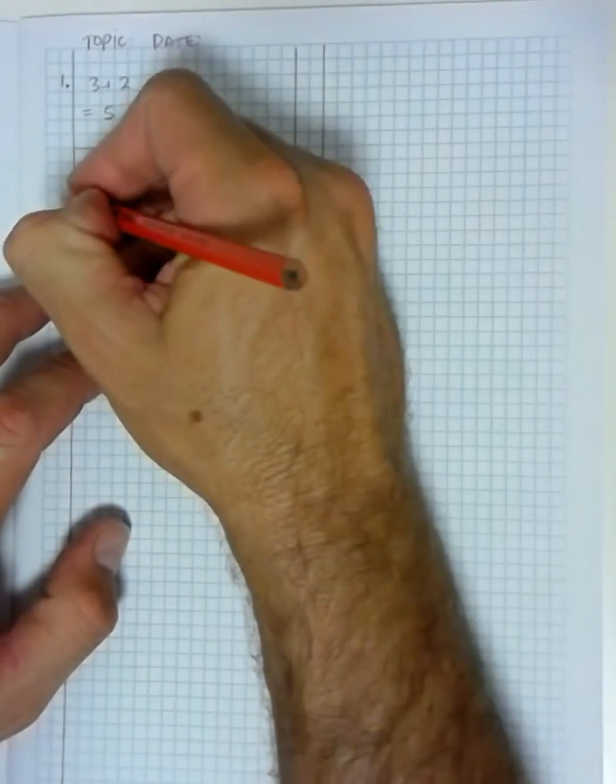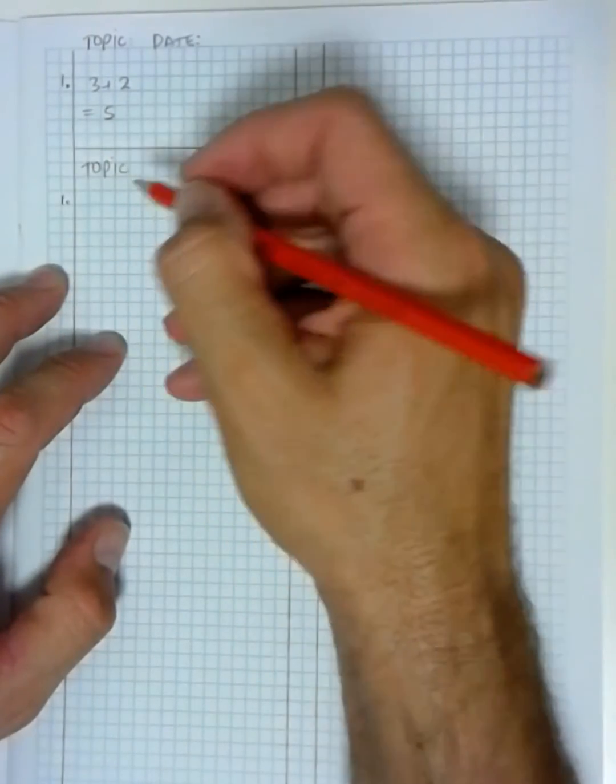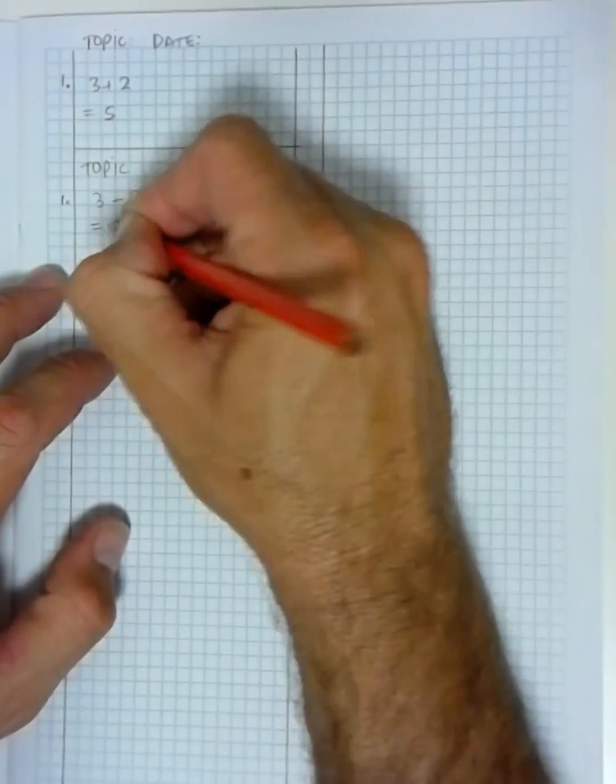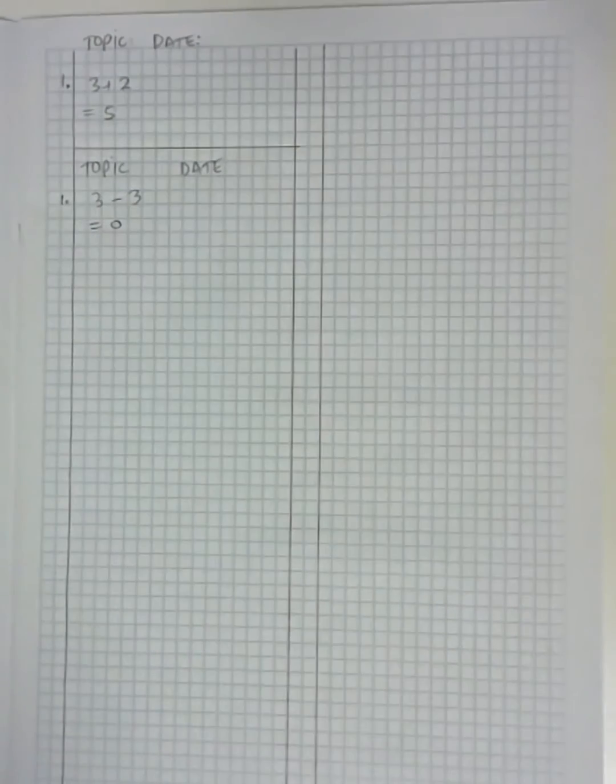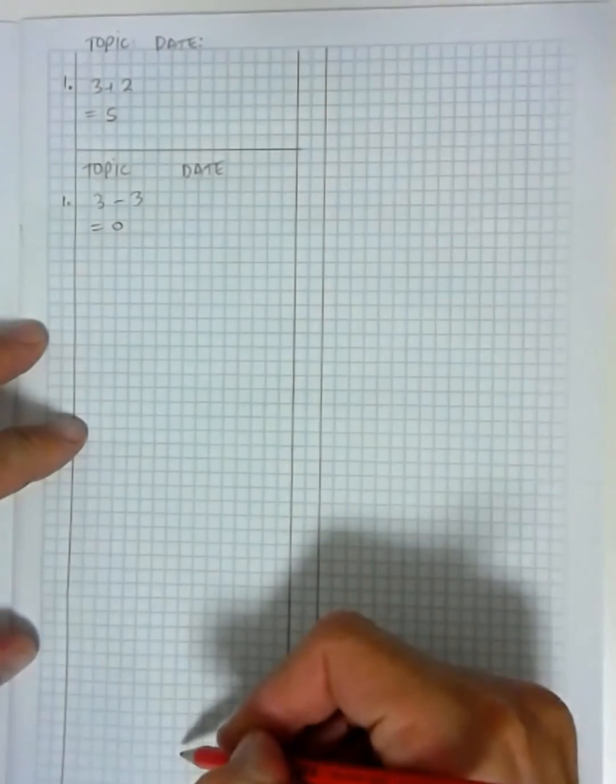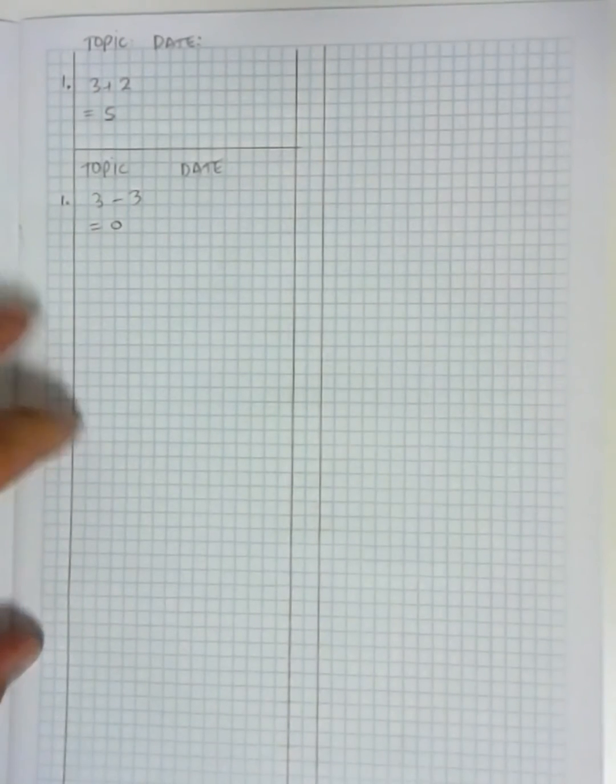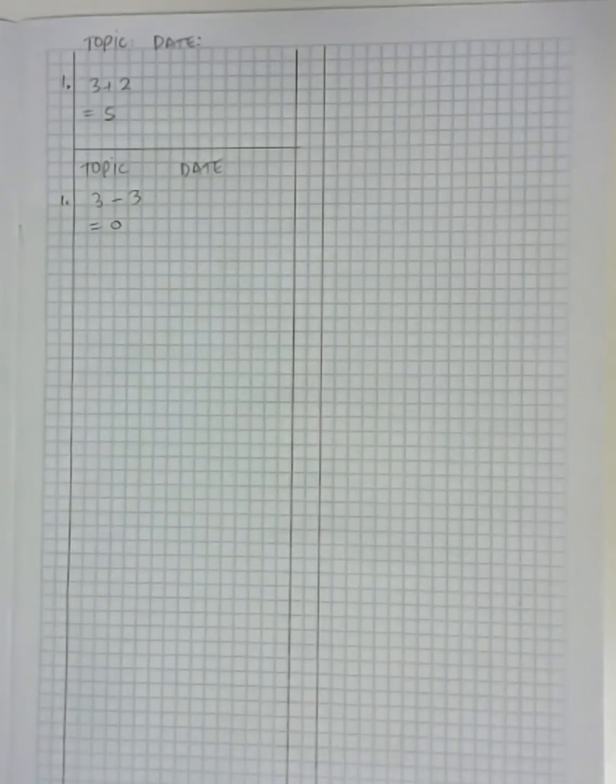Topic and date once again. Start the questions on the left hand side. Three minus three equals zero. So we're going to work down the left hand column, go up to the top of the right hand column, and work your way down. That's it, thanks.